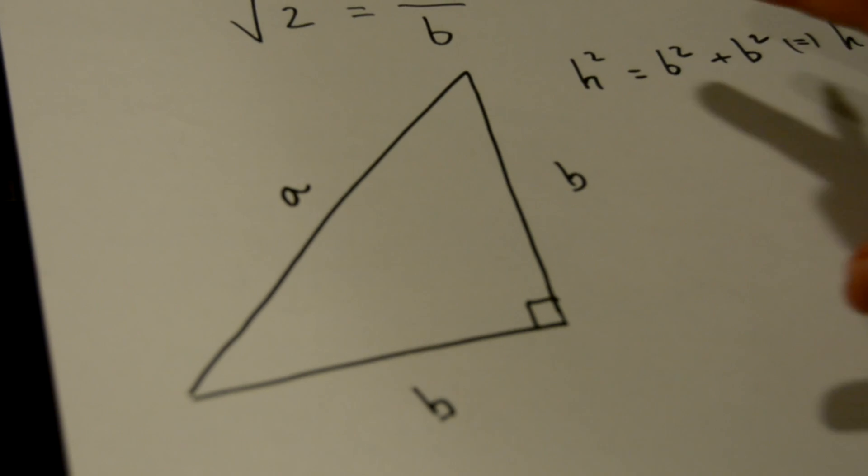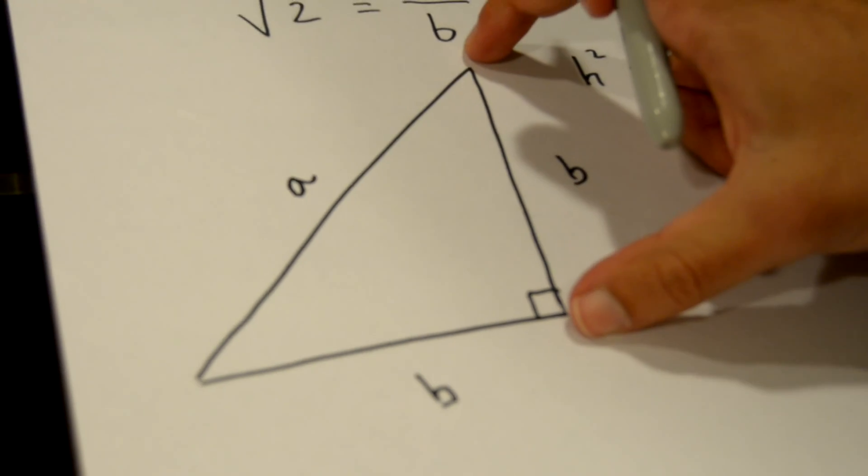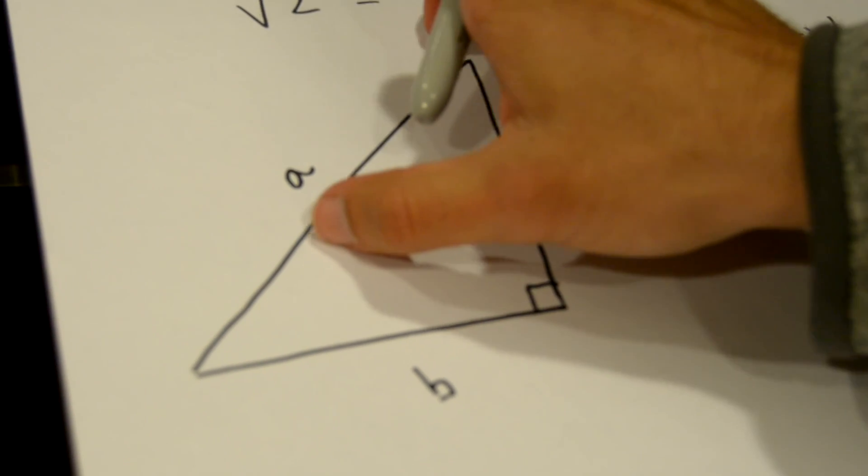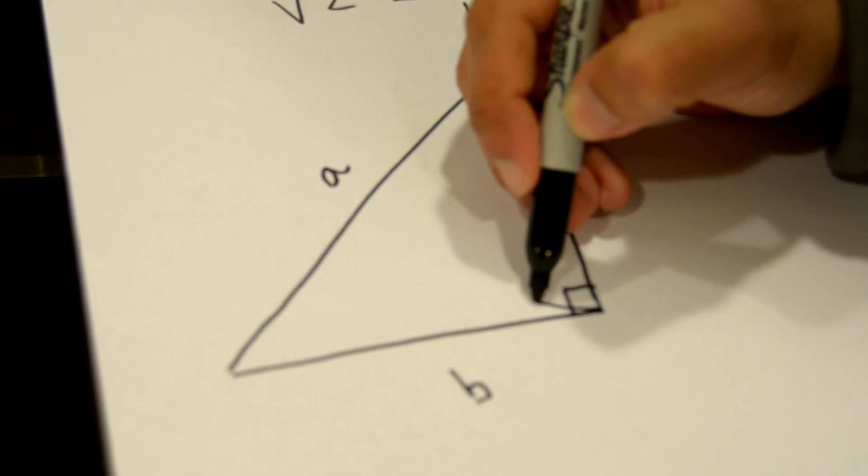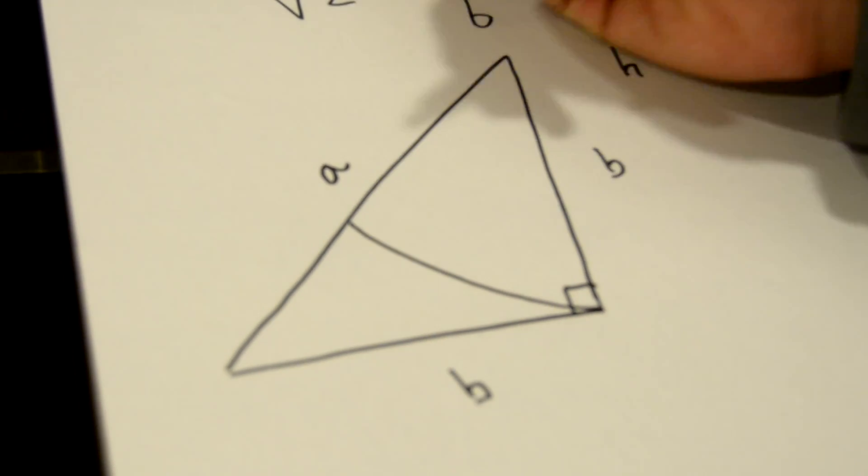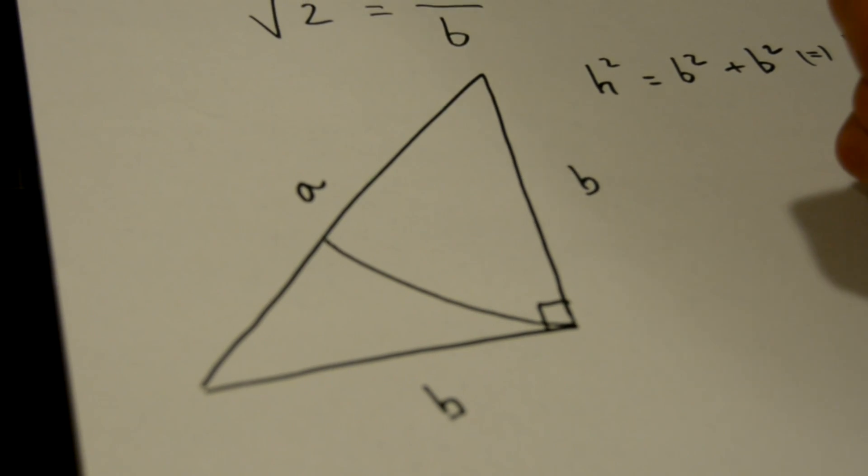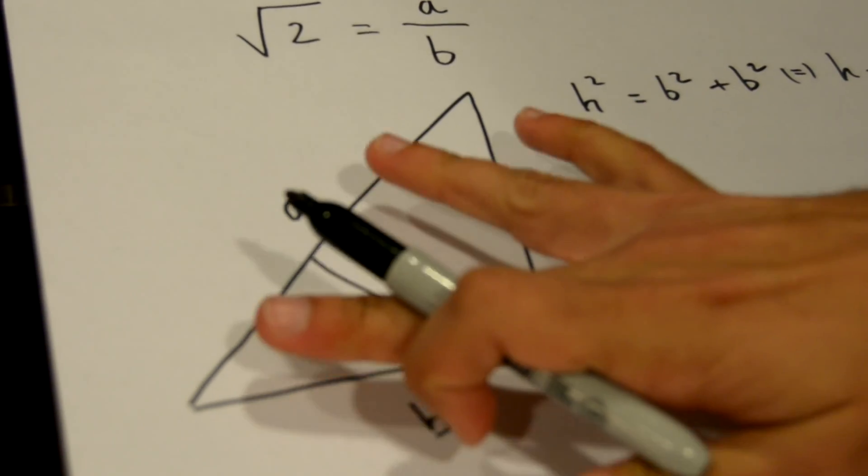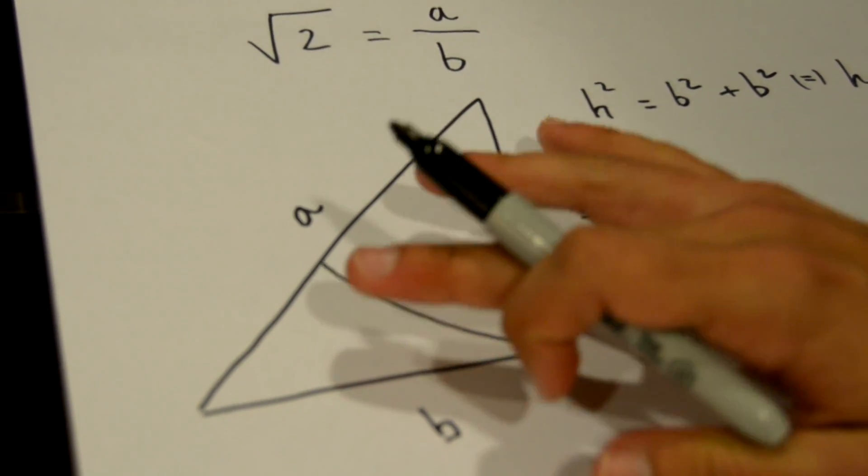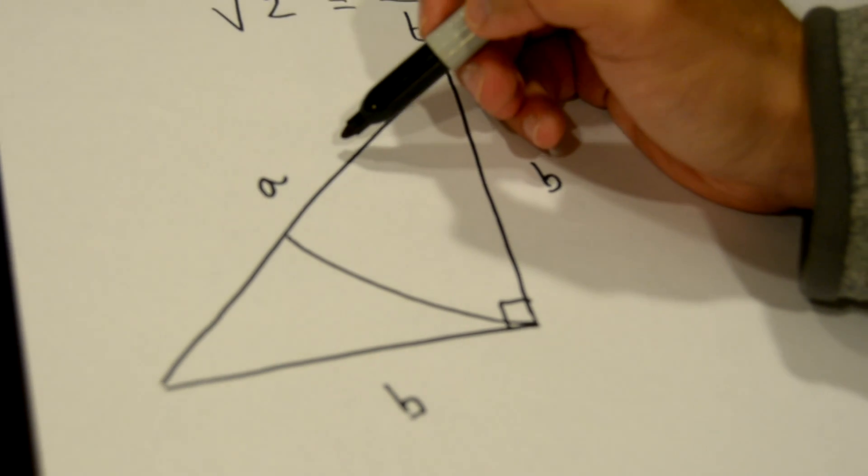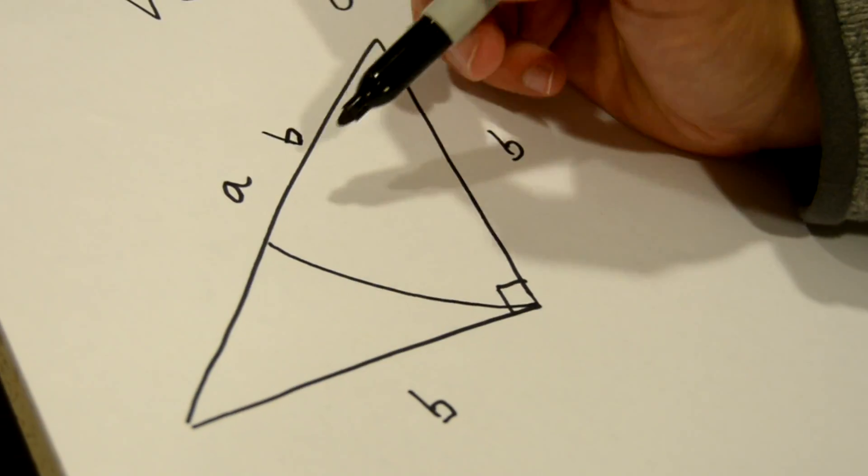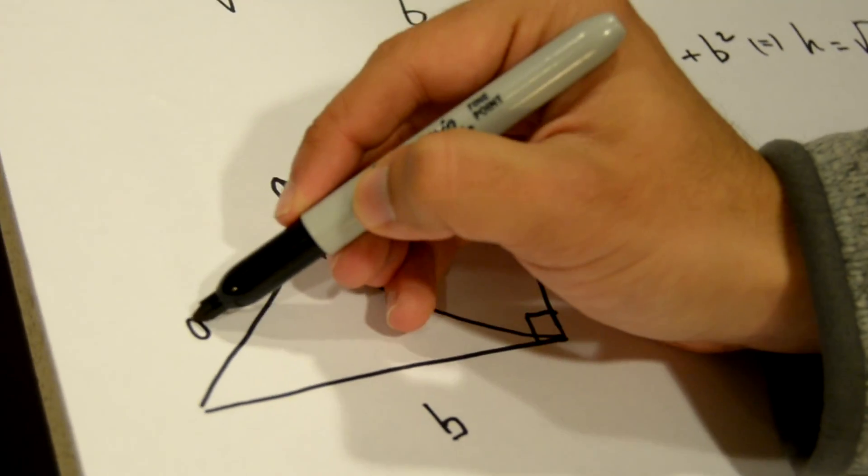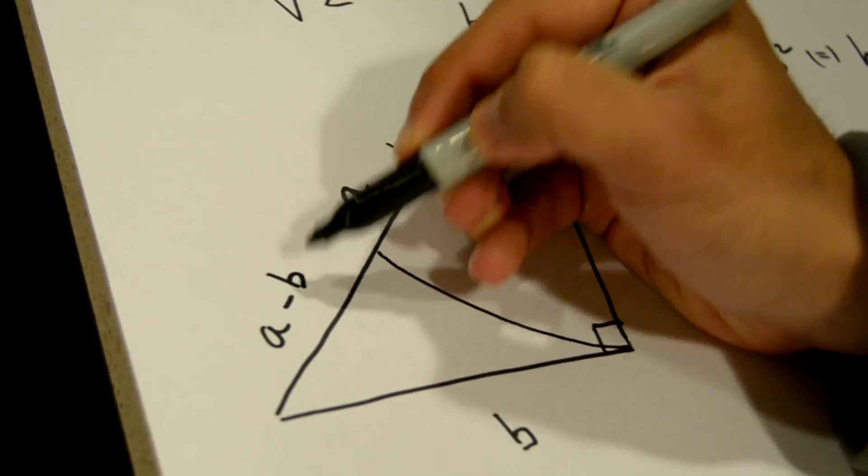Now if we pick this side b and project it onto a, something like this, we see that we split a into two portions: the length of the first one is b, and the length of the second one is a minus b.